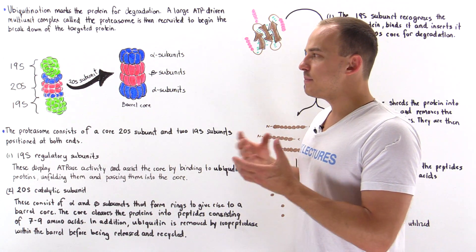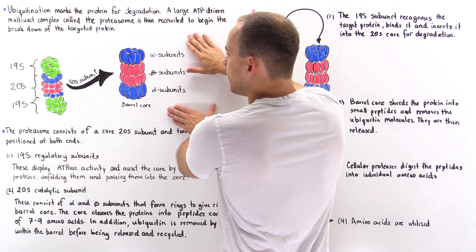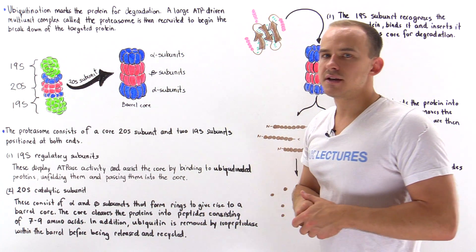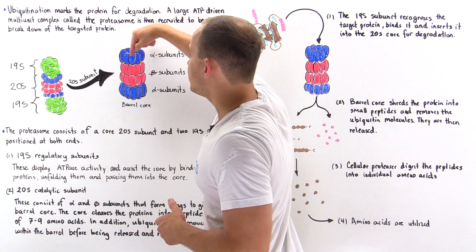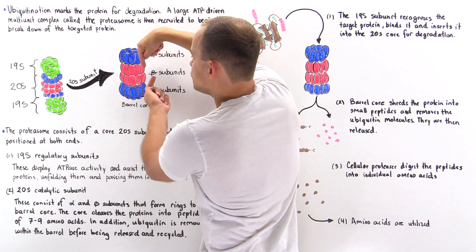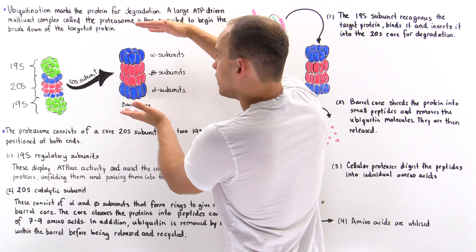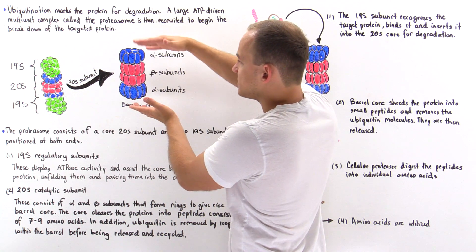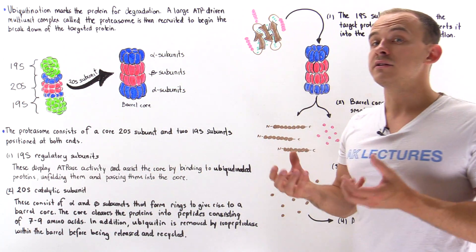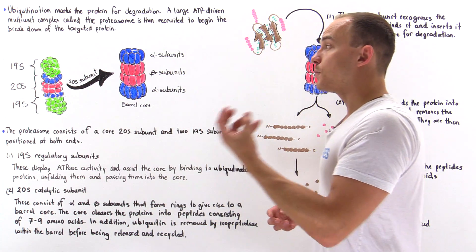It's the 20S unit that basically catalyzes the breakdown of the protein. If we zoom in on this 20S unit, we find two types of subunits that make up this core structure: the alpha subunit and the beta subunit. We have seven alpha subunits on each end, and in the middle, two ring structures that each consist of seven beta subunits. These four rings stack on top of one another to form a hollow cavity, and within that hollow cavity is where we have the catalytic activity — forming a barrel core that catalyzes the breakdown of protein.